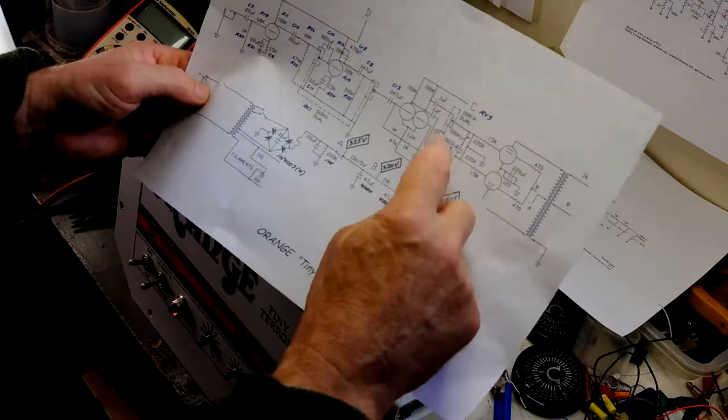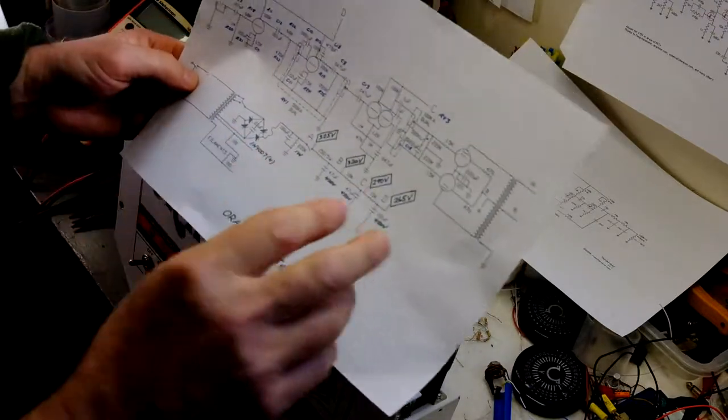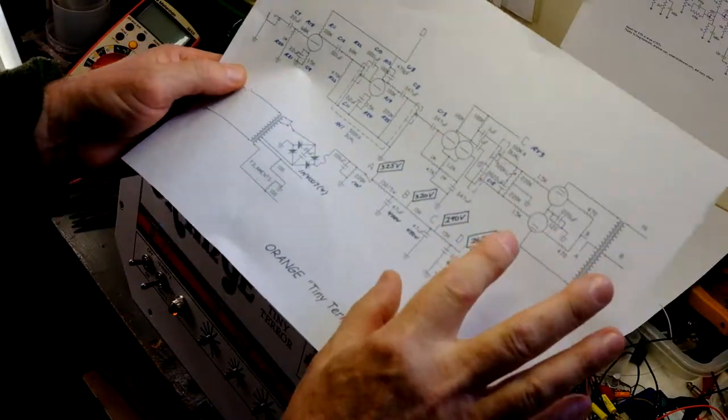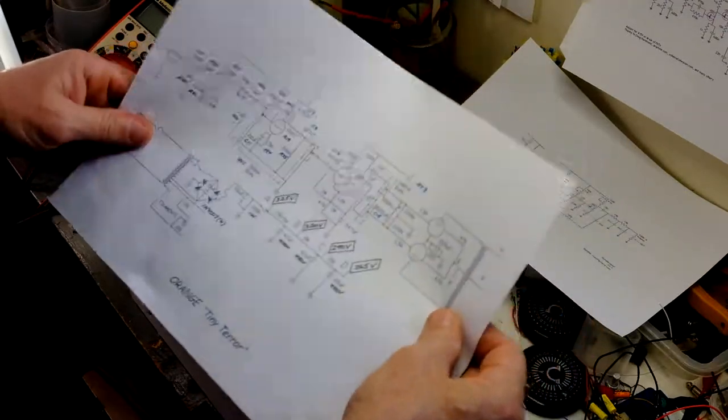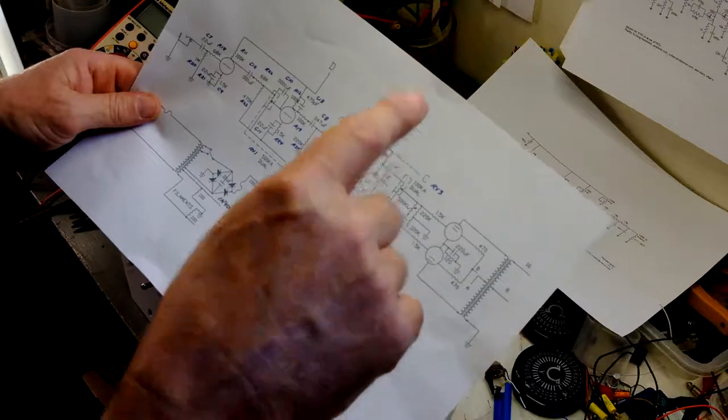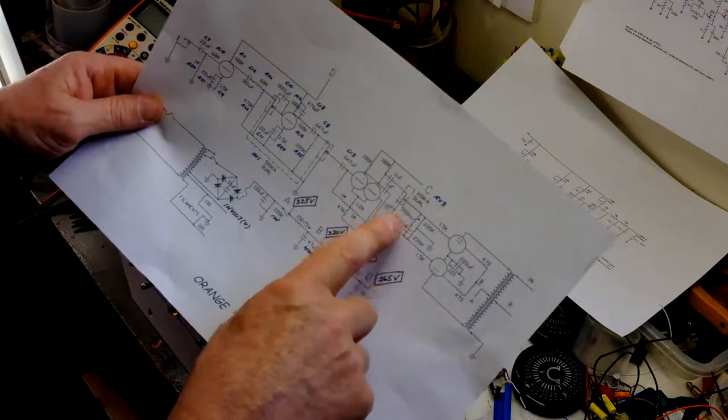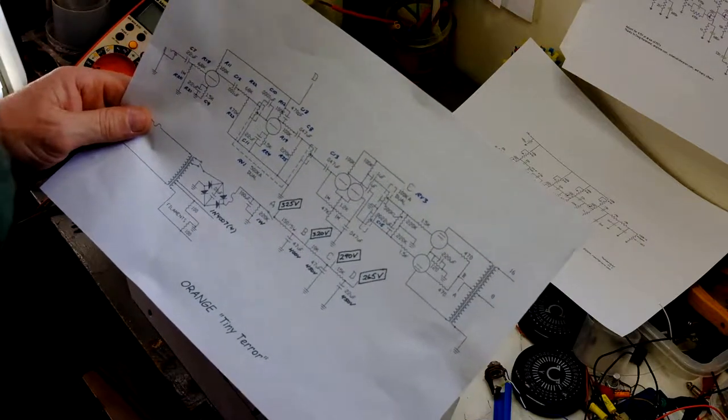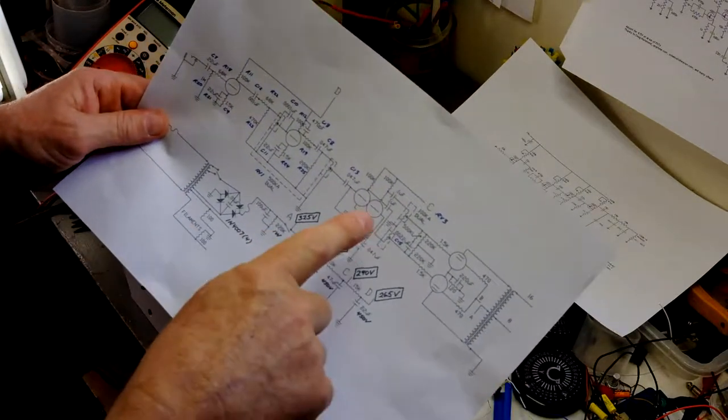It has a post-phase-inverter volume control, Trainwreck-style. Google Trainwreck—he was a kind of amp guru in the 80s who built a lot of amps that a lot of the heavy metal guys use, and not only those. Lots of guys. Highly regarded. I think he might be dead now, I'm not sure. He's famous for this post-phase-inverter volume control which nobody else did. Marshall didn't do it.